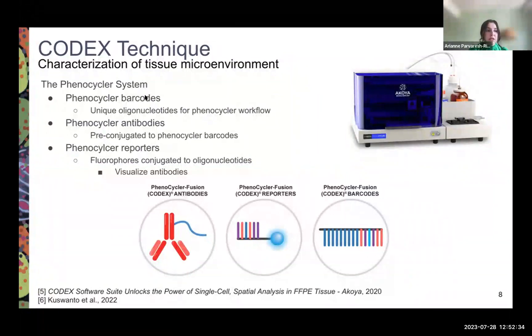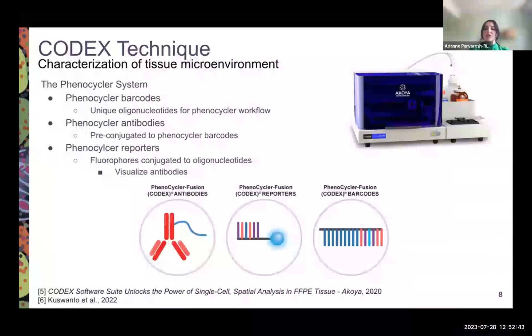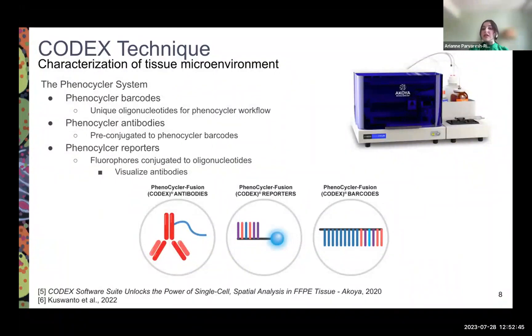CODEX employs three different reagents: barcodes, antibodies, and reporters. Antibodies primarily target specific biomarkers of interest such as cell surface proteins or intracellular markers. Reporters are secondary antibodies which are conjugated with oligonucleotide barcodes, and when they're excited with a light source, they fluoresce and that's how the image is created. The barcodes are attached to the secondary antibodies to create an index for each biomarker to later be detected.